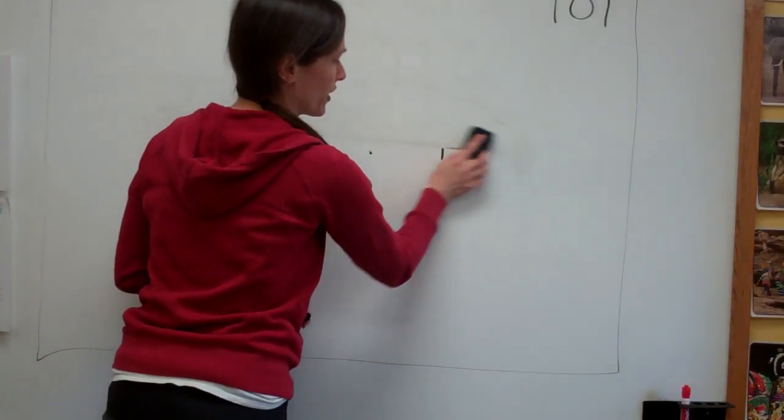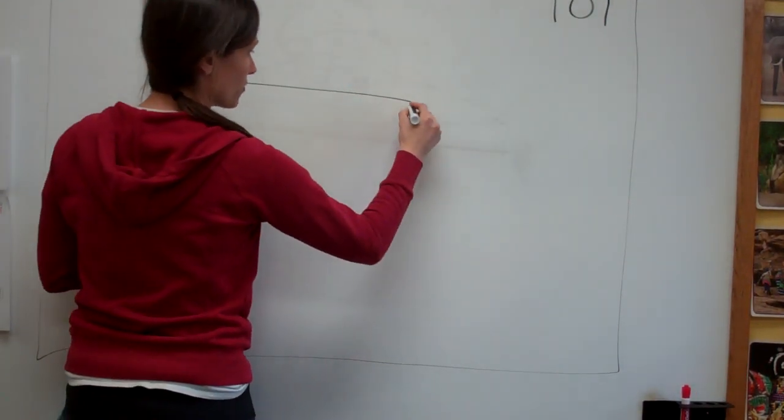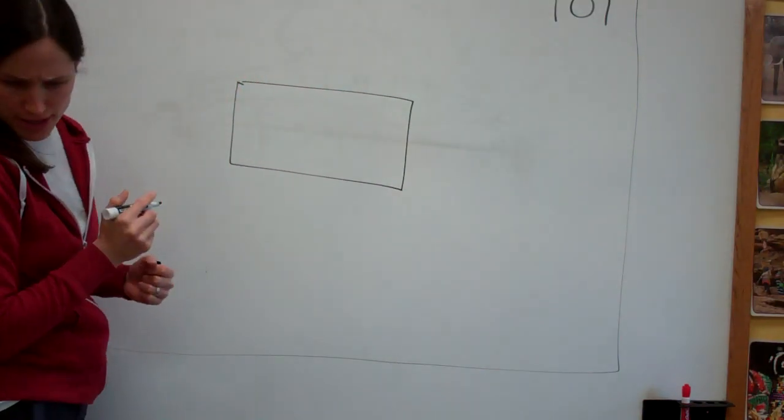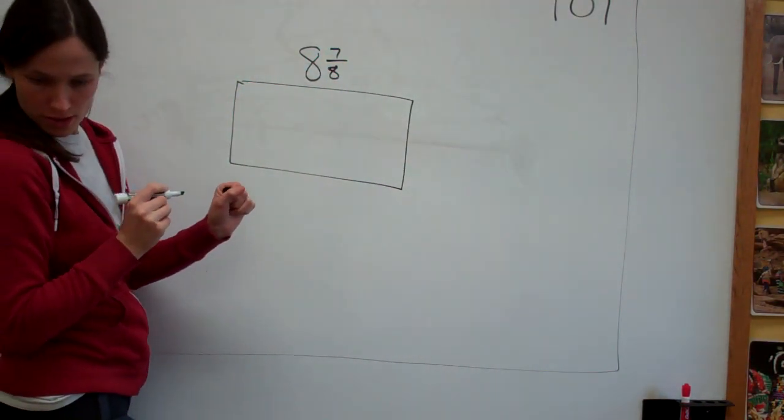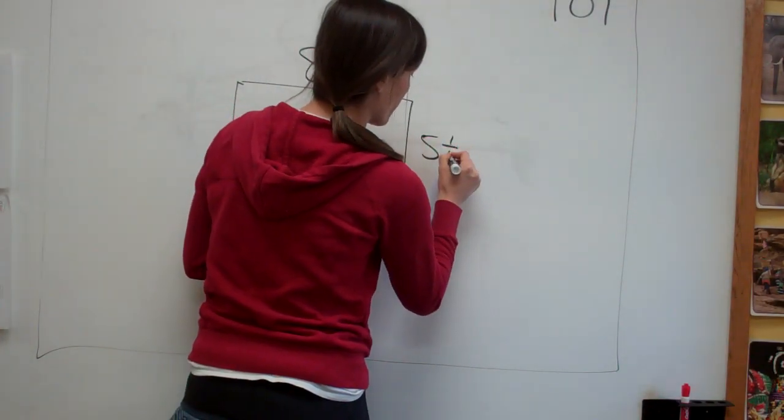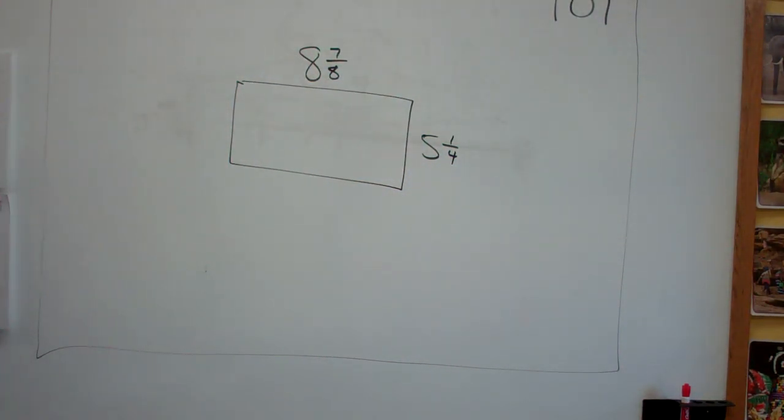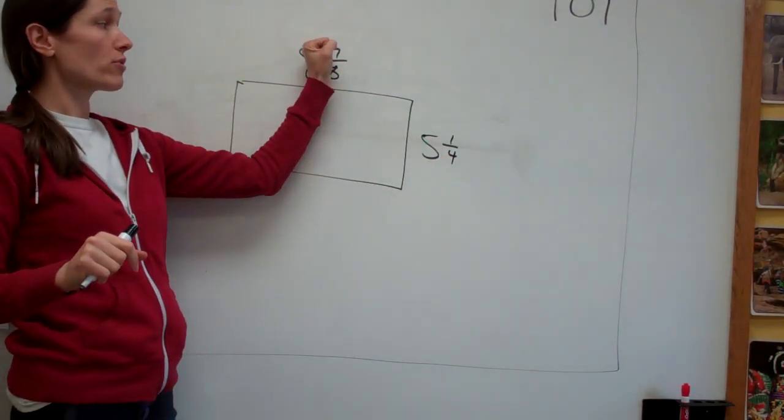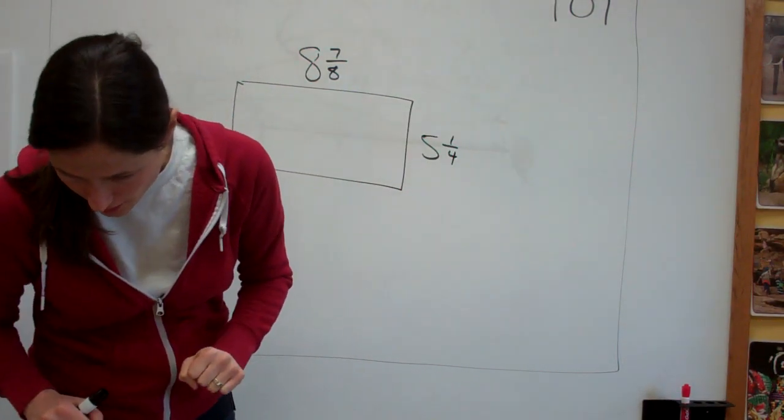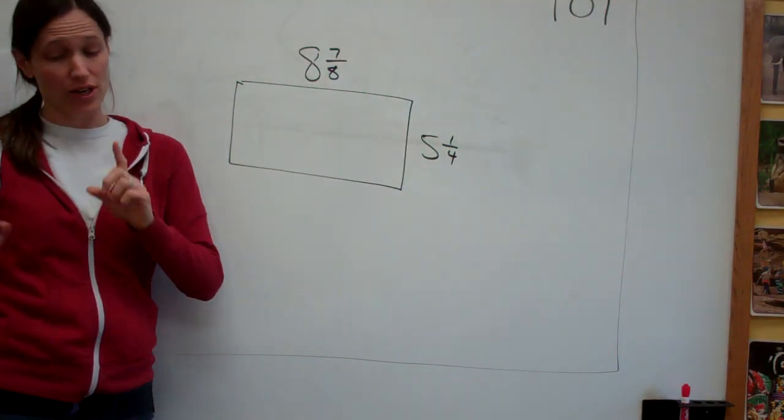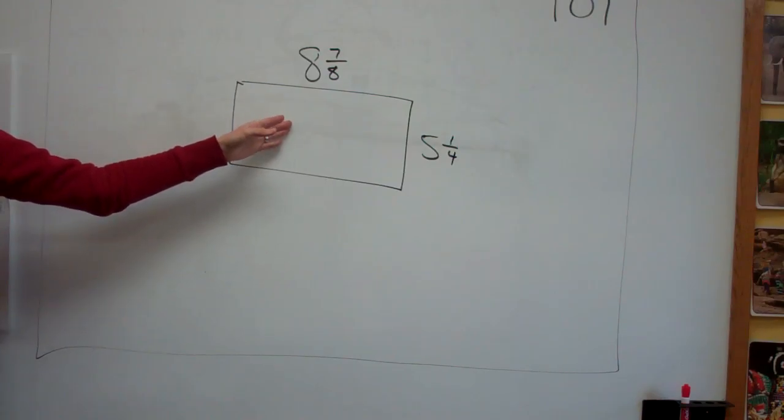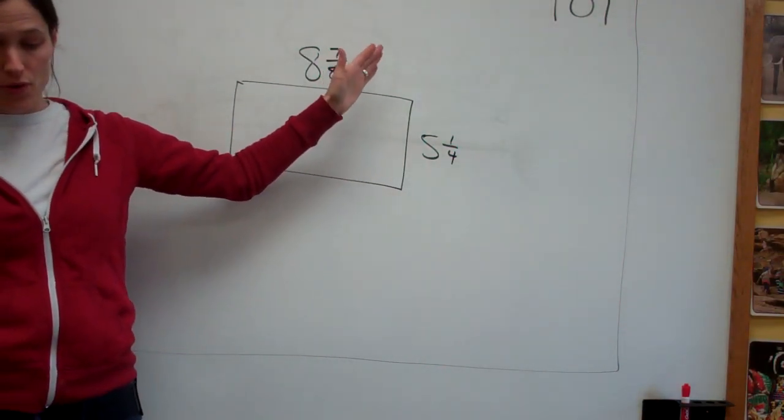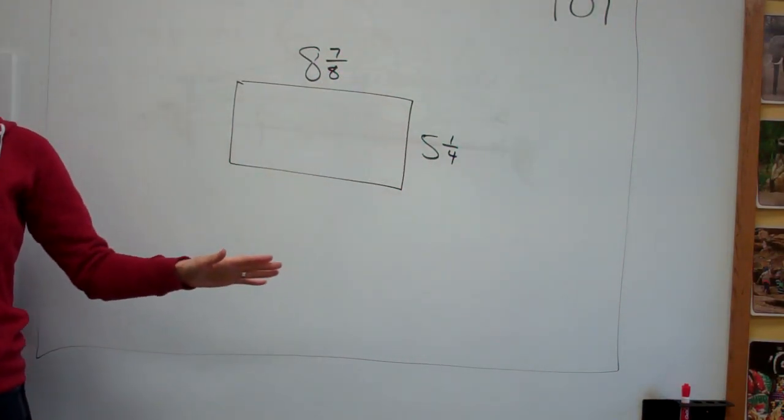Okay. Let's do one more. And this one is a different kind of problem. They draw a rectangle, and they give us some measurements. Eight and seven-eighths and five and one-fourth. These are a little bit easier to actually see. Okay, just a minute. They're wanting us to round it, and then they want us to find the area. So here's what they say.